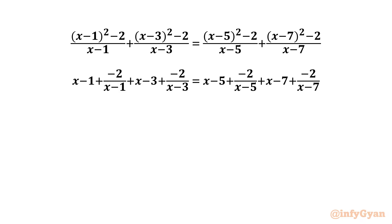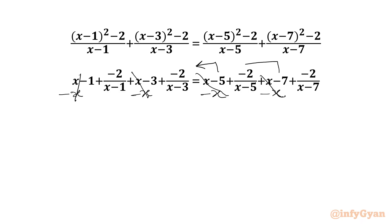Now we are going to subtract 2x from both sides. We write 2x as (x plus x), so the x terms cancel on each side. Then we take minus 5 and minus 7 to the LHS.